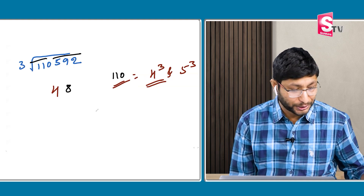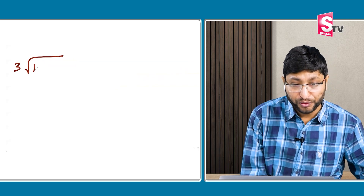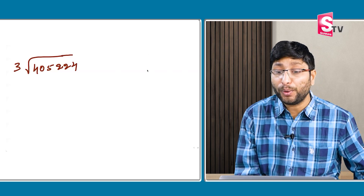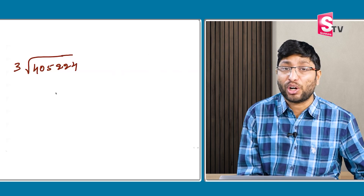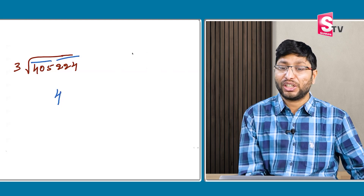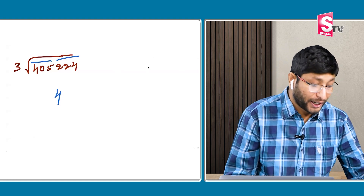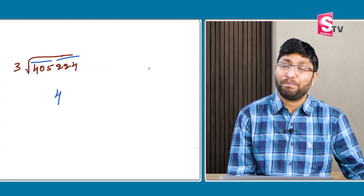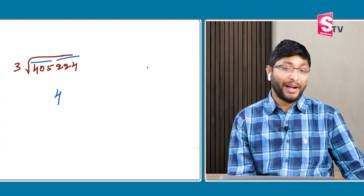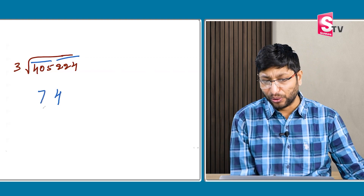One more question: cube root of 405224. The number ends with 4, so the cube root also ends with 4. Split as 405 and 224. 405 falls between 7 cube (343) and 8 cube (512). Take the lower number, 7. So the answer is 74.